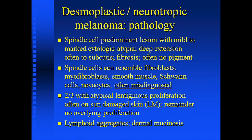This is a spindle cell proliferation that can have almost any histology — it can look like a scar, a neurofibroma, a dermatofibroma. Often it has no pigment, no discerning histologic or even sometimes clinical features by which you can make the diagnosis. The spindle cells can look like myofibroblasts, fibroblasts, or Schwann cells. It is often misdiagnosed. I can't tell you how many times I've seen this not diagnosed correctly and only discovered at a later stage.